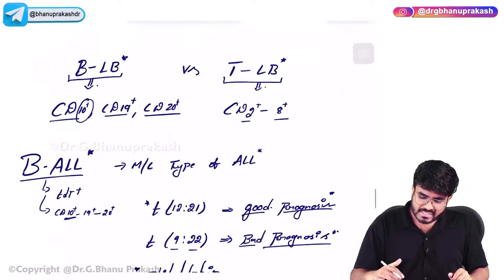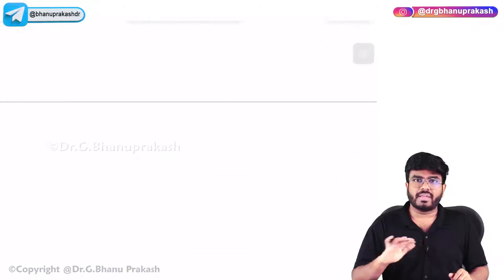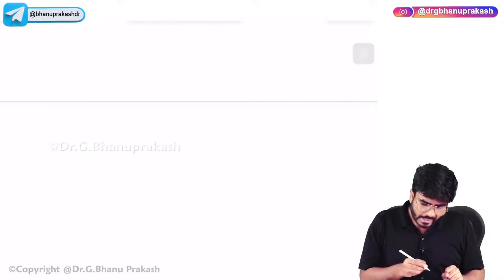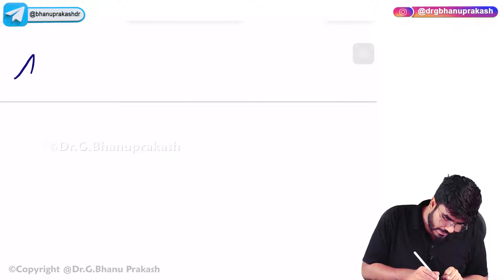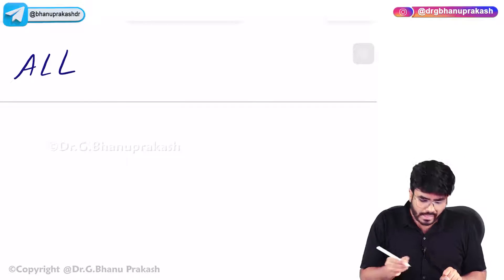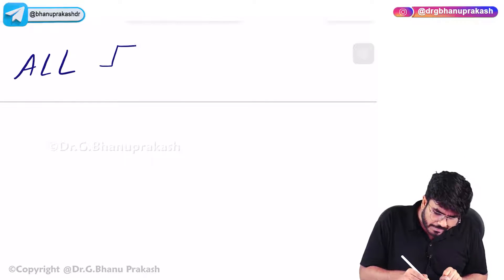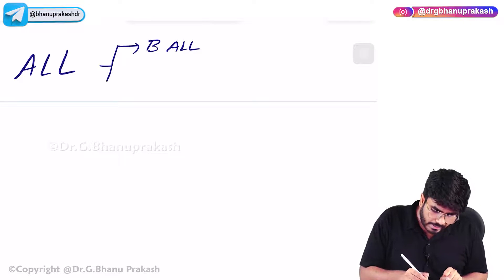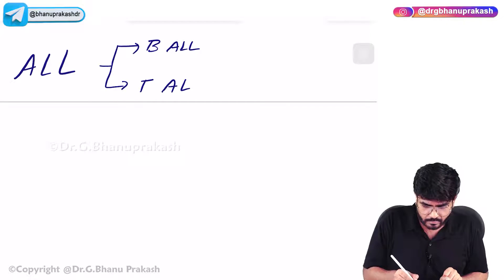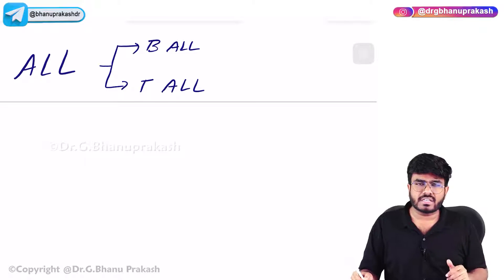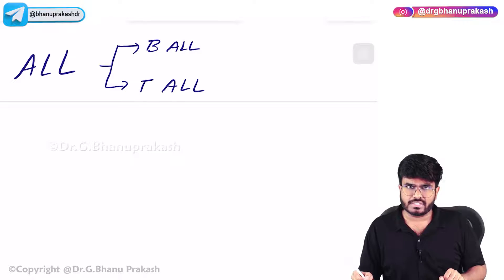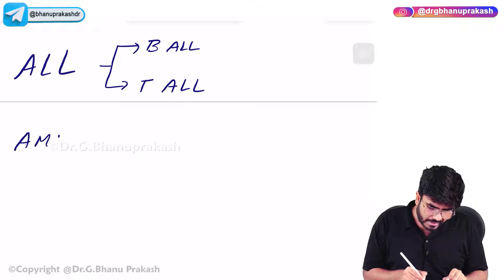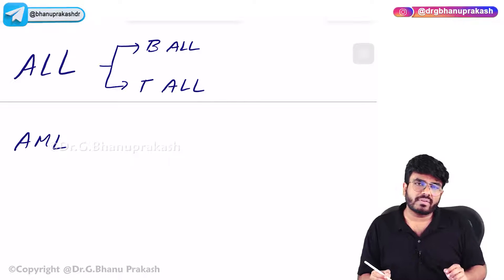Let's discuss the types of AML. Just like ALL is of two types - B-ALL and T-ALL - AML is also classified into different types. Here I'm going to discuss the main ones needed for your exam.